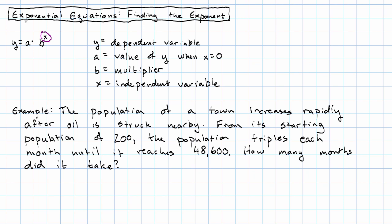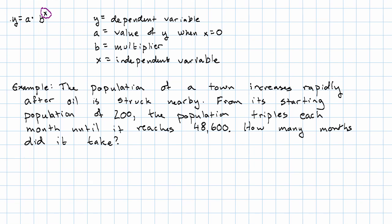Let's see an example of that. Suppose the population of a small town increases rapidly after oil is struck nearby. From its starting population of 200, the population triples each month until it reaches 48,600. How many months did that take?